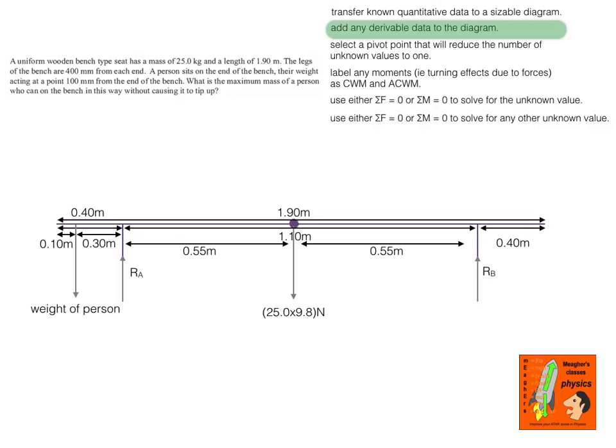I've put a couple of reaction forces on each of the legs — the ground will be exerting a reaction force against the legs — and I've put in the distance the person is from one of those legs as well. The next thing I'll do is select a pivot point that'll reduce the unknown values, which at the moment are the reaction forces on each of the legs. The leg I've labeled A is the one it's going to pivot over if someone sits. If it does actually tip, the leg where reaction B is will leave the ground, so I'll take a pivot at the base of leg A. That means I don't have to worry about force A because it's going through the pivot point — it doesn't have a radius or a turning effect.